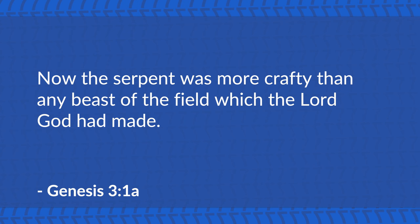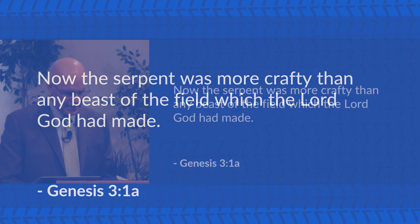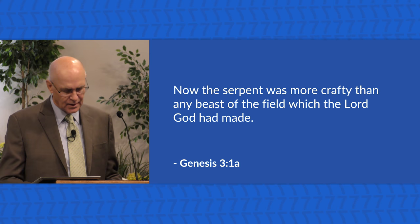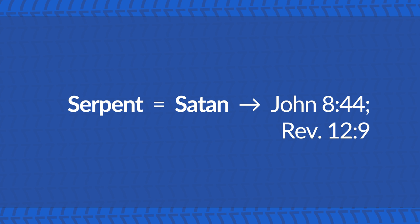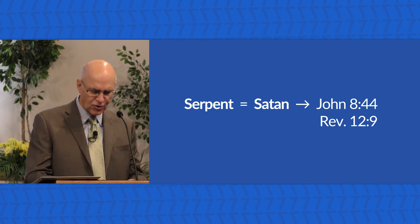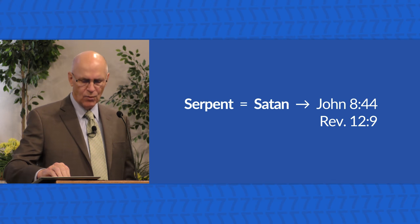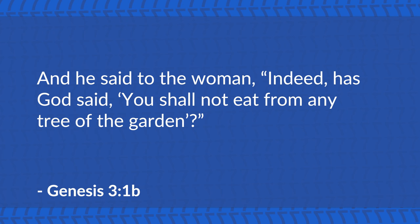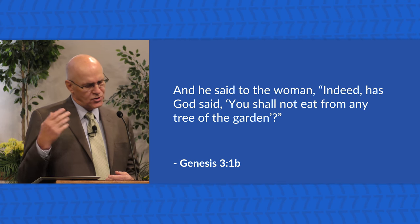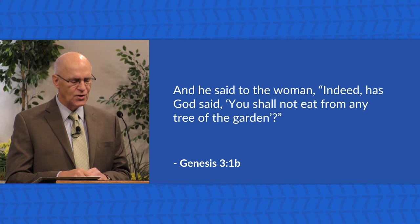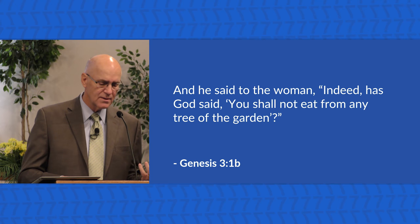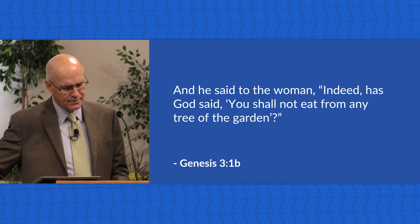We read Genesis 3, beginning in verse 1: 'Now the serpent was more crafty than any beast of the field which the Lord God had made.' Here we only learn about the serpent's true identity — Satan — later on in the Bible, in John chapter 8 verse 44 and Revelation 12 verse 9. In this scene, the serpent is presented as crafty, and his deceitful nature is immediately on display. He said to the woman, 'Indeed, has God said you shall not eat from any tree of the garden?' Verse 1b begins with not just a question, but a subtle questioning of God's authority and goodness — is He really serious about this command?